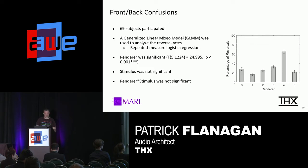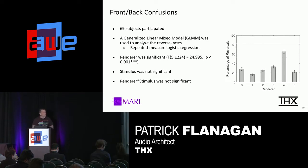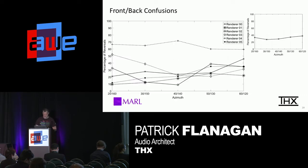Then we jump to front-back confusions. Again, 69 participants. This is a different analytical method. We found the renderer was significant to understanding where the front-back confusion was. The stimulus was not, and renderer-times-stimulus was not. The unique thing about this result is that renderer four, which is a first-order ambisonics type renderer, performed extremely bad — over 50% of the time a stimulus presented in the front appeared behind them. Renderer one performed very well. Here's a different way to look at front-back confusions azimuth-dependent: at 40 degrees and 140 degrees of azimuth you see a tight cluster of correct answers. Renderer four performs poorly along a lot of different azimuth locations.